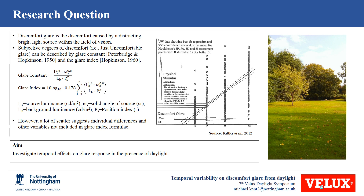Over time, what people found was that when calculated levels of discomfort glare using these glare indices were compared against subjective responses of discomfort glare, you would typically find a large scatter — a large spread in the data. This may suggest that there might be other variables beyond those already embedded within the discomfort glare formula that might influence the perceived levels of discomfort.